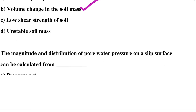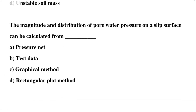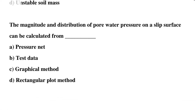Next question: the magnitude and distribution of pore water pressure on the slip surface can be calculated from — Option A: pressure net, Option B: test data, Option C: graphical method, Option D: rectangular plot method. The correct answer is Option A, pressure net.